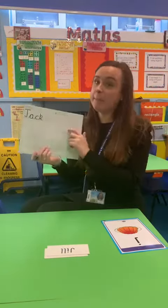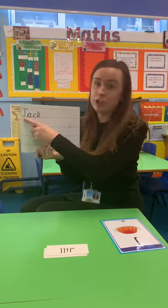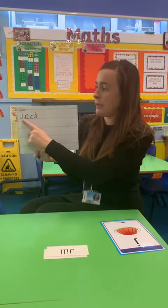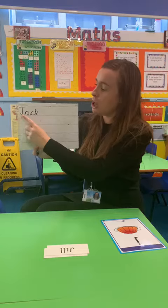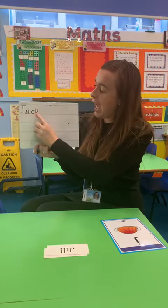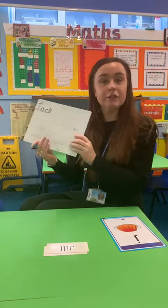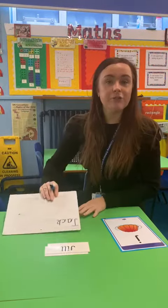Now I've used a capital J because Jack is a name and it has to have a capital letter. So we've got J, A, K — Jack. Have you got another one you'd like me to write?